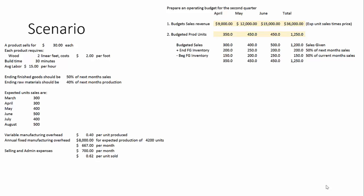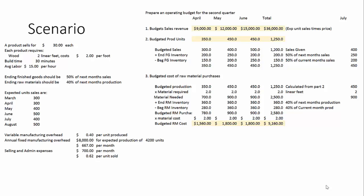When you get to June, you have to take into account the July expected sales units, but all of those work exactly the same. One thing to note in the far right total column: we only take the ending finished goods inventory of 200 from June, and the beginning finished goods inventory of 150 from April — we do not add those across. If you have any questions about that, please ask below.